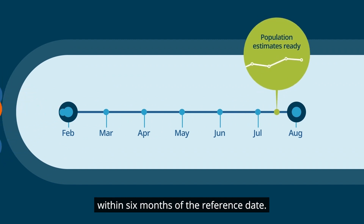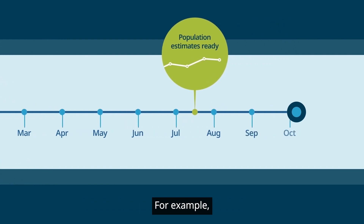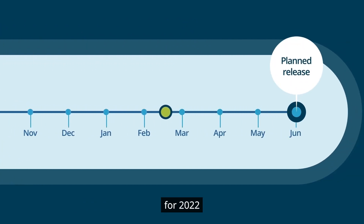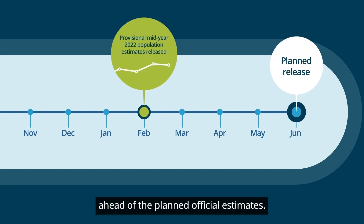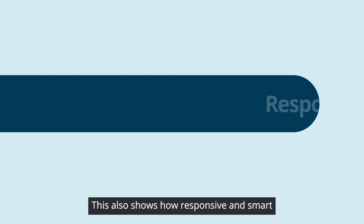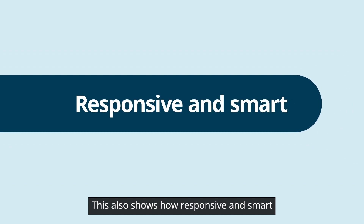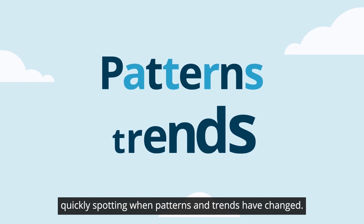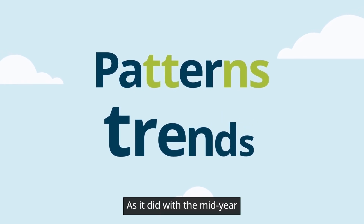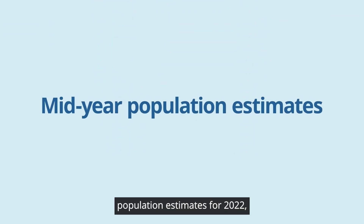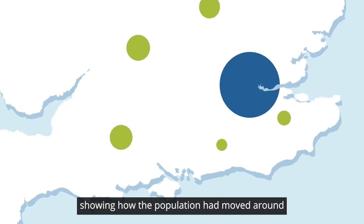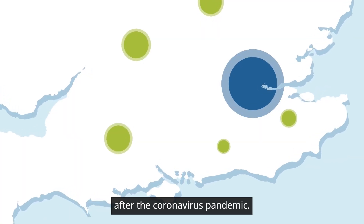This makes sure that our population estimates are consistent and accurate, and means we can produce provisional population estimates within six months of the reference date. For example, we were able to produce mid-year population estimates for 2022 four months ahead of the planned official estimates. This also shows how responsive and smart the DPM can be, quickly spotting when patterns and trends have changed, as it did with the mid-year population estimates for 2022, showing how the population had moved around after the coronavirus pandemic.